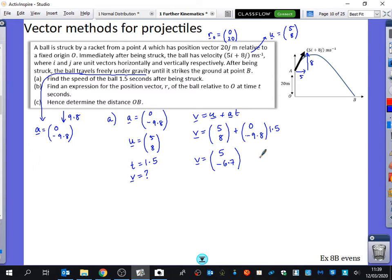So just think, previously what you would have done is you would have done SUVAT vertically, and you would have said that U equals 8, A equals -9.8, T equals 1.5, and you would have done V equals U plus AT, and you would have got -6.7. And then you would have remembered the horizontal would still be 5, and you would put those back together to find out the speed.